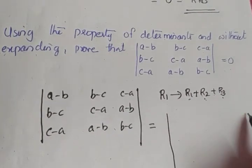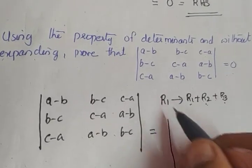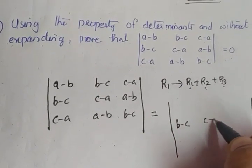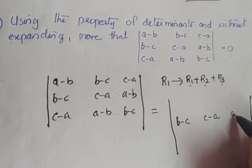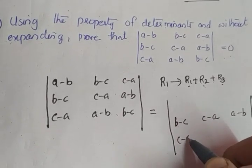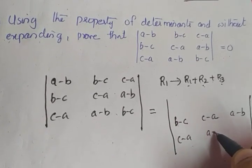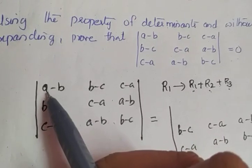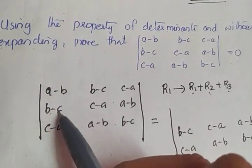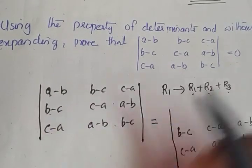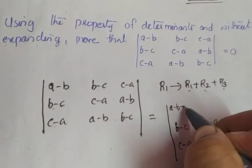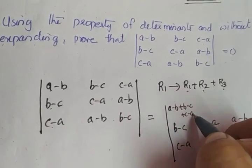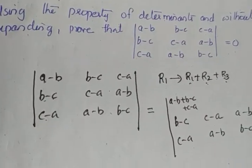The first row is changing; the second and third rows remain the same. The first element of the new R1 is A minus B plus B minus C plus C minus A. Here minus B and plus B cancel, A and minus A cancel, C and minus C cancel, giving the first element as 0.